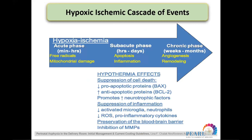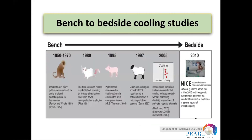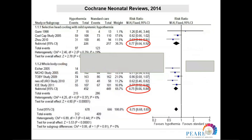Knowing the underlying pathophysiology, we can think of a modality that ameliorates the outcome. We aim for suppression of cell death, suppression of inflammation, and preservation of the blood-brain barrier — across the acute, sub-acute, and chronic phases. From bench to bedside, animal studies have happened since 1950, and since 2005, six randomized controlled trials have been conducted. All of them support therapeutic hypothermia, with a number needed to treat of seven.